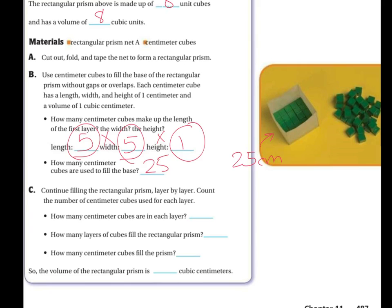Now you're going to continue filling the rectangular prism layer by layer and count the number of centimeter cubes used for each layer. So how many cubes are in each layer? Well, we just said the first it's 25. How many layers of the cube filled the rectangular prism? Five. So that means I did five layers of 25 going up. So how many centimeter cubes filled?